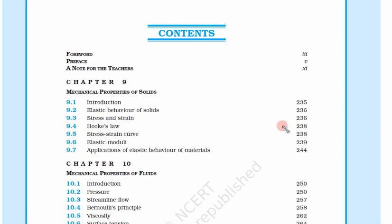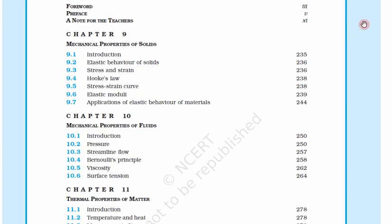We have seen the introduction to Part 1 and had a glimpse of what we are going to learn in Part 1 of Physics Class 11. Now let us see what is there in Part 2. In Part 2 we have Chapter 9, which is mainly concerned about mechanical properties of solids.